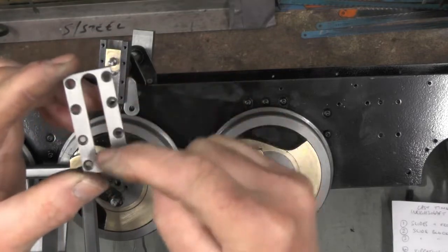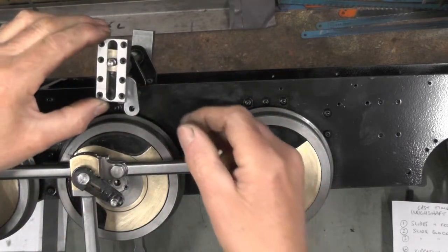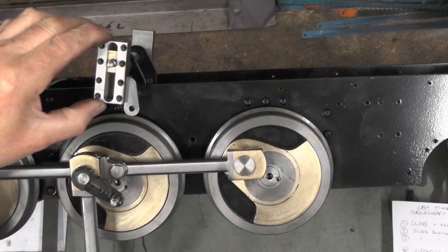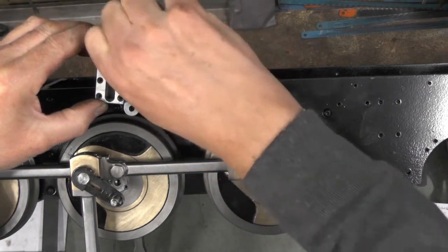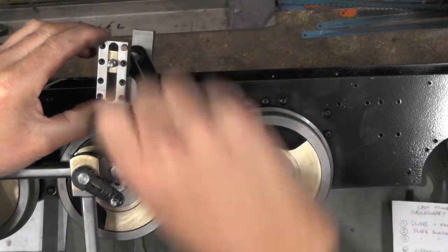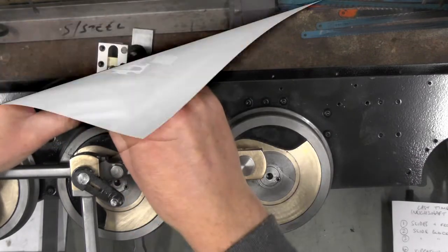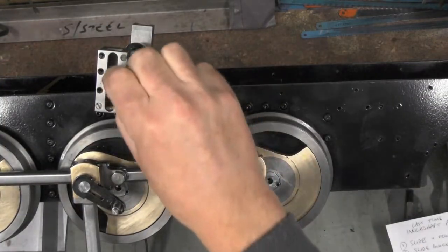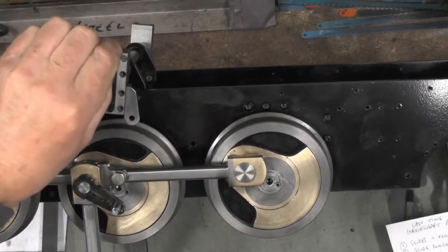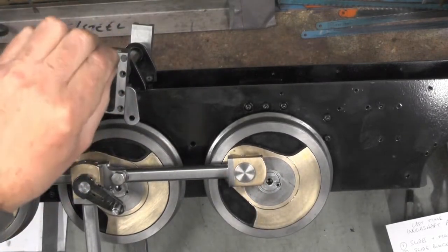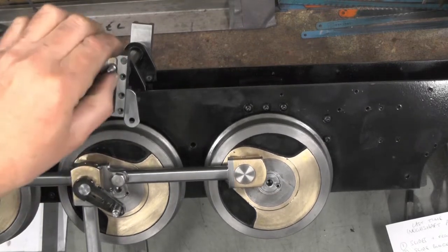Then on top of that you put your cover which is held on with eight 6BA screws. I'll just put two in for now just to hold it in - countersunk. So that's the sliding and that wants to be a good fit in there. There's no oil on that yet, it's a little bit tight but once I've got it oiled up that'll be a nice fit.